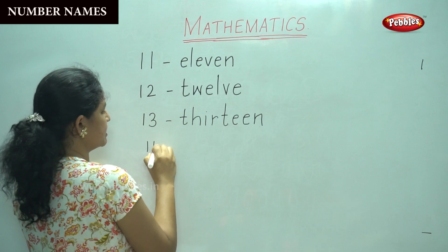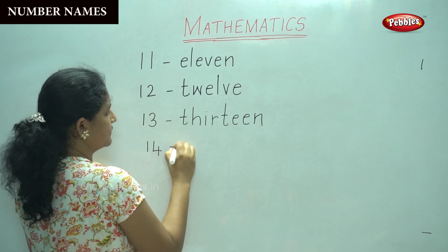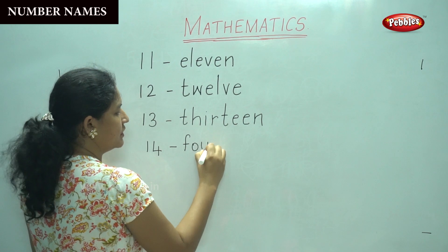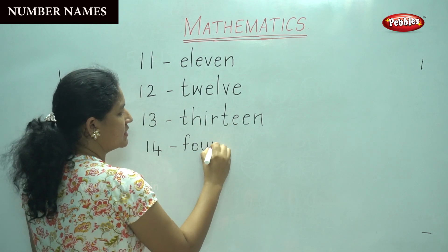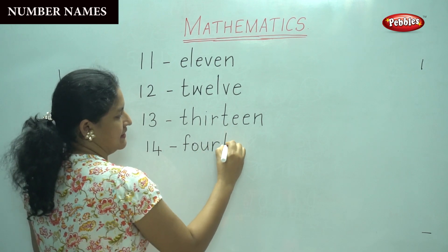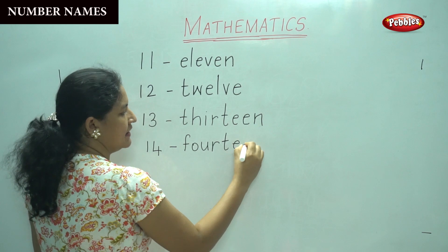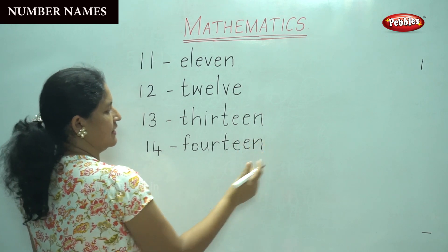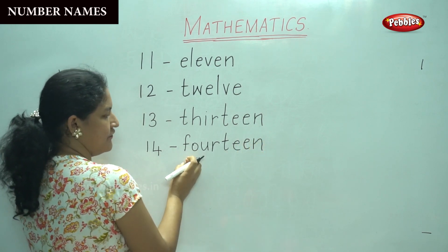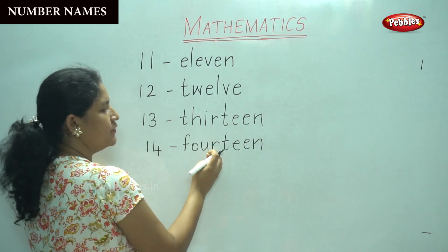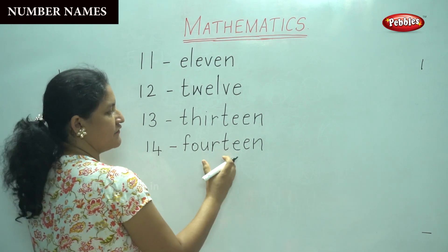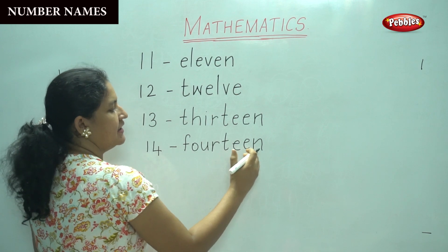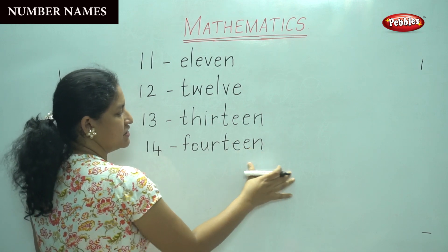Number 14. F, O, U, R — 14. T, E, E, N. 14. F, O, U, R — that's 4. You have to add teen: T, E, E, N. 14.